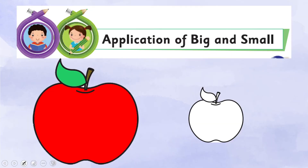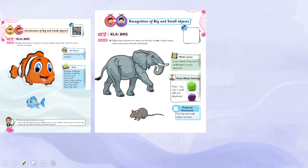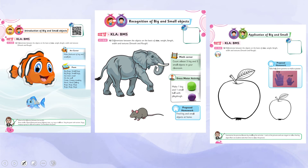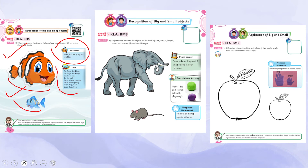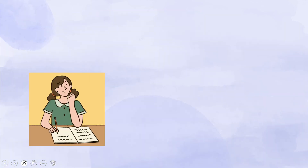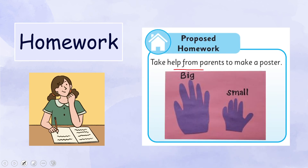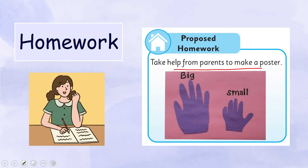With that, our lesson has come to an end. Let's do a wrap-up: first, in the art corner we made flashcards comparing similar animals — big fish with small fish, big bugs with small bugs. The next day we compared different animals — an elephant and a rat. Then in the gross motor activity we made a big ball and small ball from play-doh. And today we colored the big apple red.